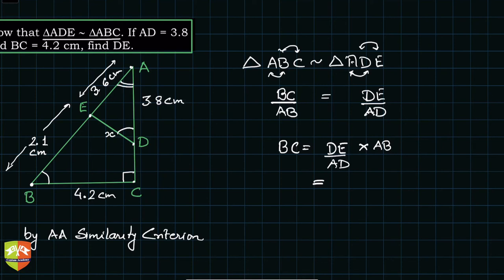So hence, let's write, instead of writing like this, let's write DE. So DE is equal to directly I can say BC upon AB into AD. What is BC? BC is 4.2. What is AB guys? If you see, AB is nothing but 2.1 plus 3.6.